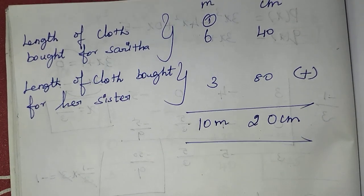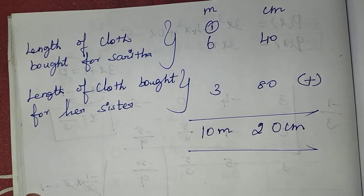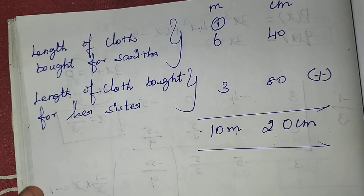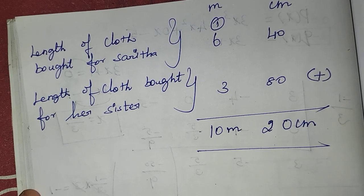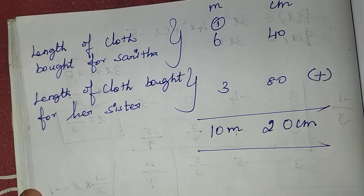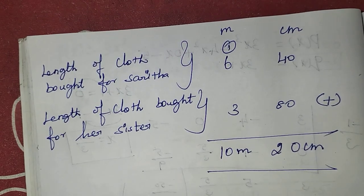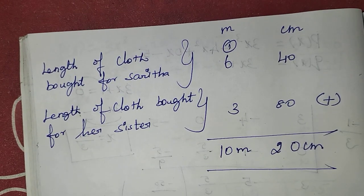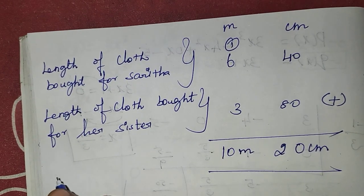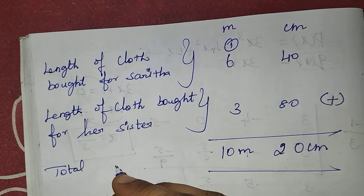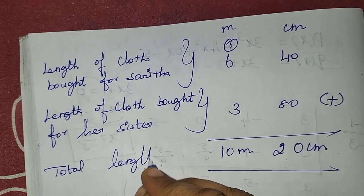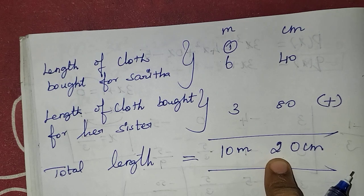Very simple concept: if you have meters and centimeters, you can add meters and centimeters directly. Total length of the cloth equals 10 meters 20 centimeters.